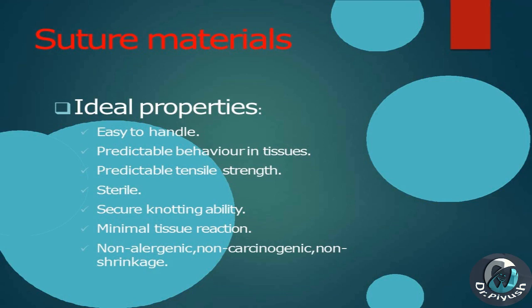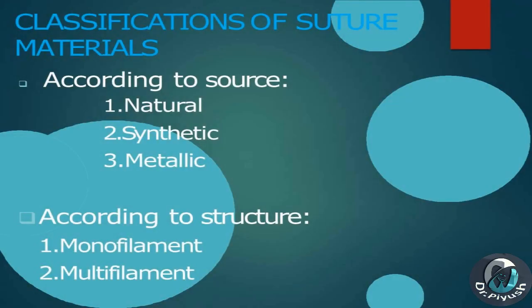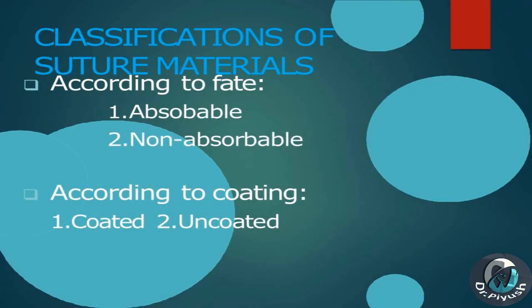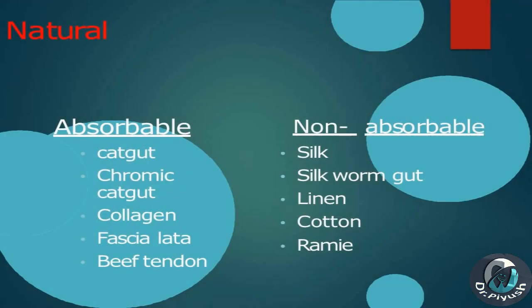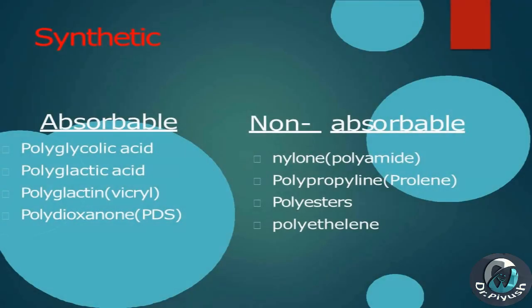Ideal properties of suture materials: easy to handle, predictable behavior in tissues, predictable tensile strength, sterile, secured knotting ability, minimal tissue reaction, non-allergenic, non-carcinogenic, non-shrinkage. Classifications: by source — natural, synthetic, metallic; by structure — monofilament, multifilament; by fate — absorbable, non-absorbable; by coating — coated, uncoated. Natural absorbable types include plain catgut, chromic catgut, collagen, and fascia lata. Non-absorbable natural types include silk, silkworm gut, linen, cotton, and ramie.